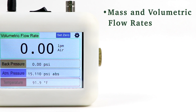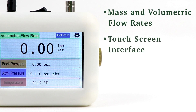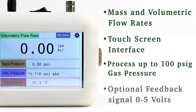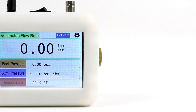Unlike other flow meters, the digital mass flow meter has a touchscreen interface offering immediate customization in seconds. It also automatically adjusts for typical errors in flow calculation due to back pressures of up to 100 psi. The unit also has an optional output of 0 to 5 volts as a measure of flow rate for use with an oscilloscope or voltmeter.